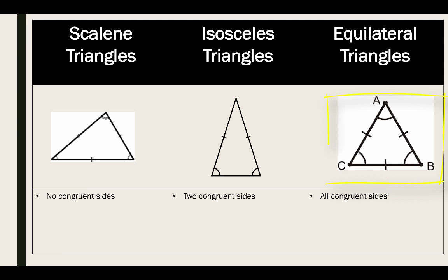And lastly we have equilateral triangles. With equilateral triangles you can again see a hint as equal. They're all equal to each other. They all have all three congruent sides.